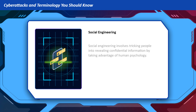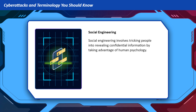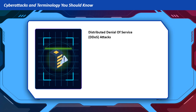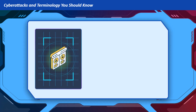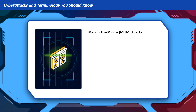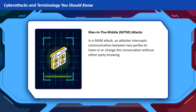Social engineering involves tricking people into revealing confidential information by taking advantage of human psychology. Distributed Denial of Service (DDoS) attacks aim to overload a system, server, or network with too much traffic, making it unavailable to users. In a Man-in-the-Middle (MITM) attack, an attacker intercepts communication between two parties to listen in or change the conversation without either party knowing.